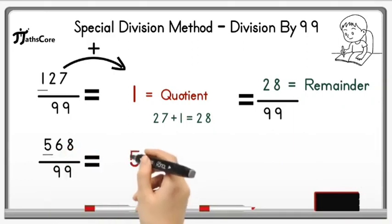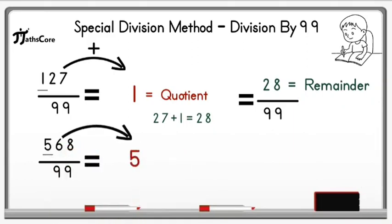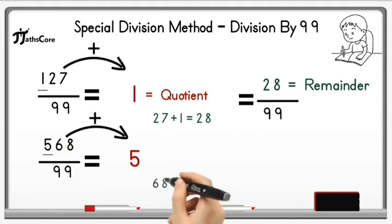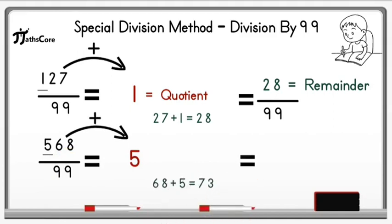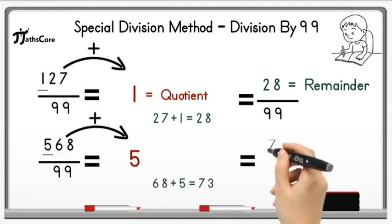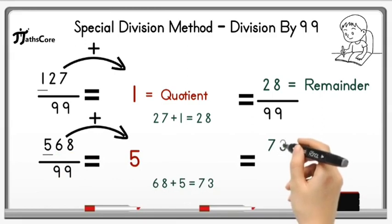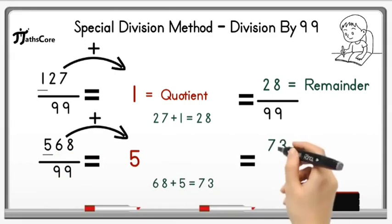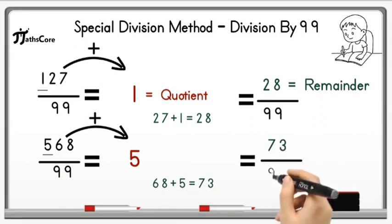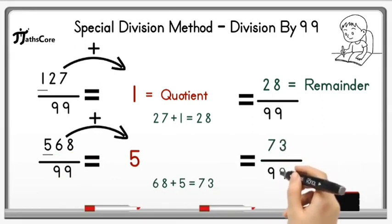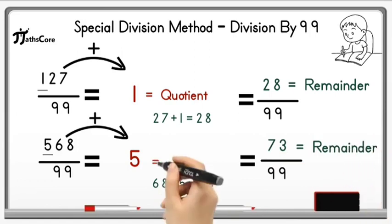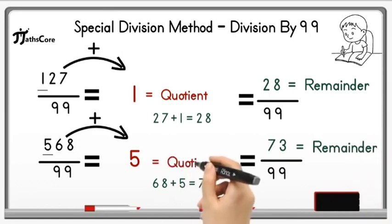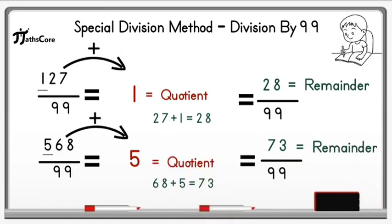Write down the hundreds digit, which is 5, and add 68 to it. So 68 plus 5 equals 73. Now divide 73 by 99 — but it is not possible because 73 is less than 99. So 73 is the remainder and 5 is the quotient.